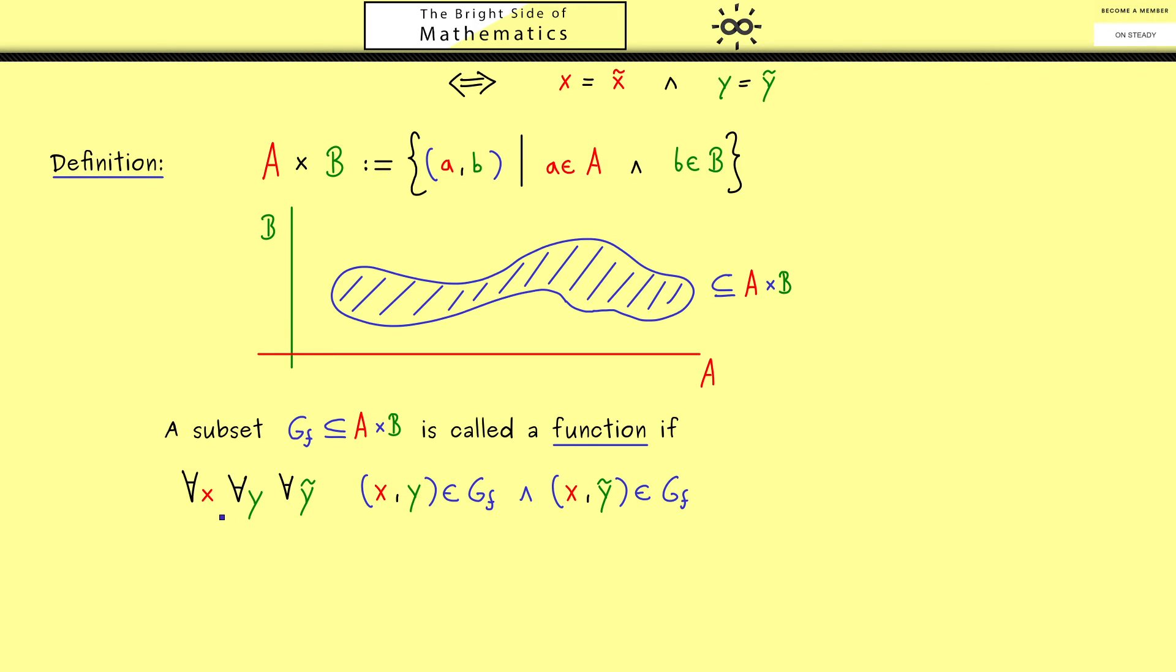Here you see we go through all the elements x on the left-hand side and all the elements y and y tilde on the right-hand side. And both pairs, but with the same x, should lie in the subset Gf. Here you might already know what we want for a function is a uniquely determined y for a given x.